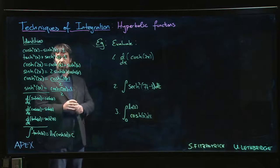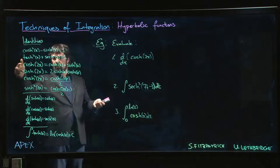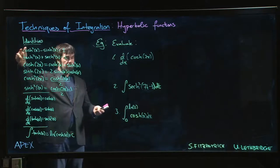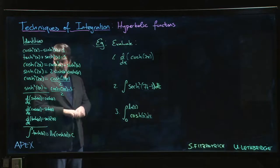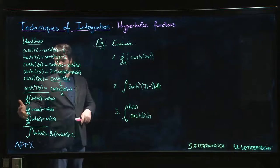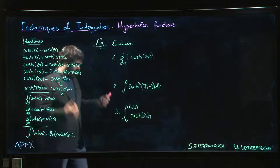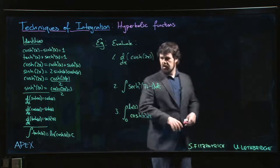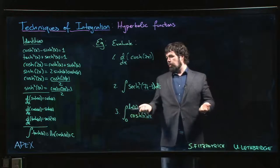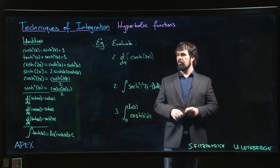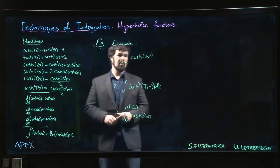Here are a number of other useful identities, analogs of common identities that we use for trig functions—like double angle formulas, power reduction formulas, things analogous to Pythagorean identities. Here we have some basic derivative results and one anti-derivative. These are probably enough to get us started, and here are a few examples where we might put some of this to use.